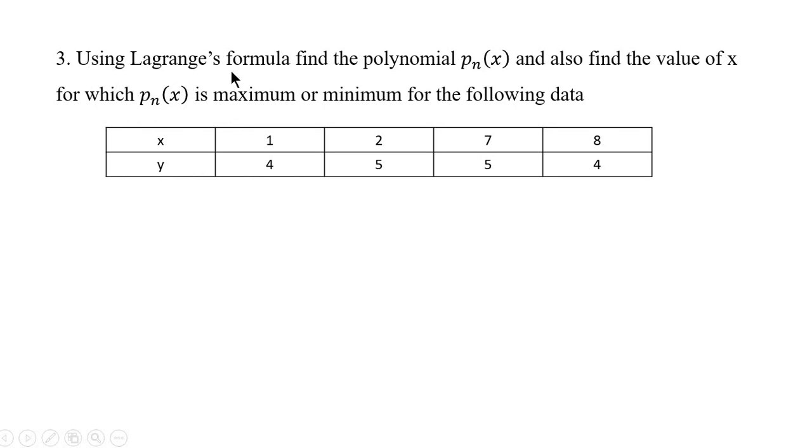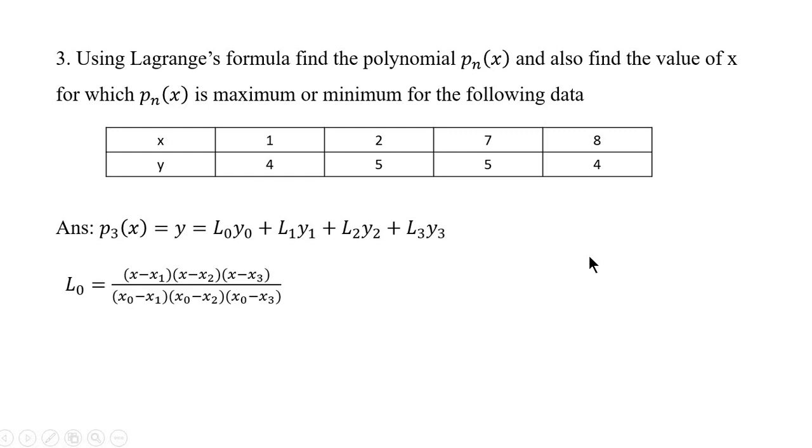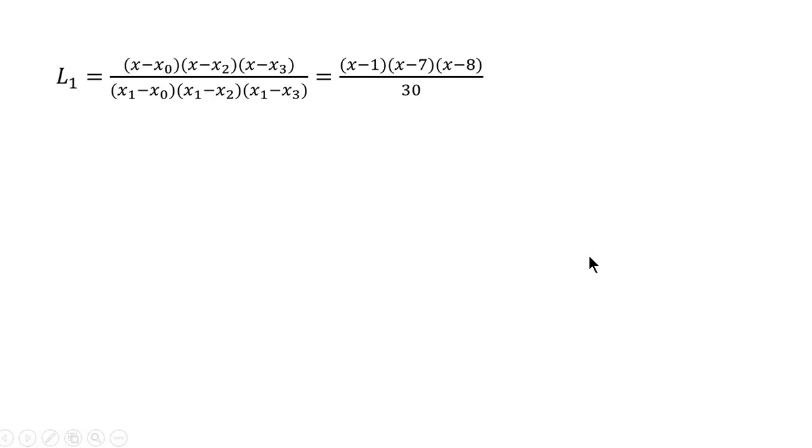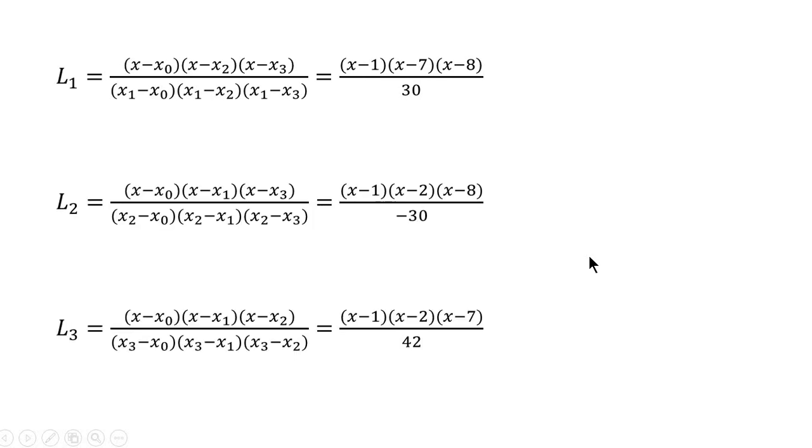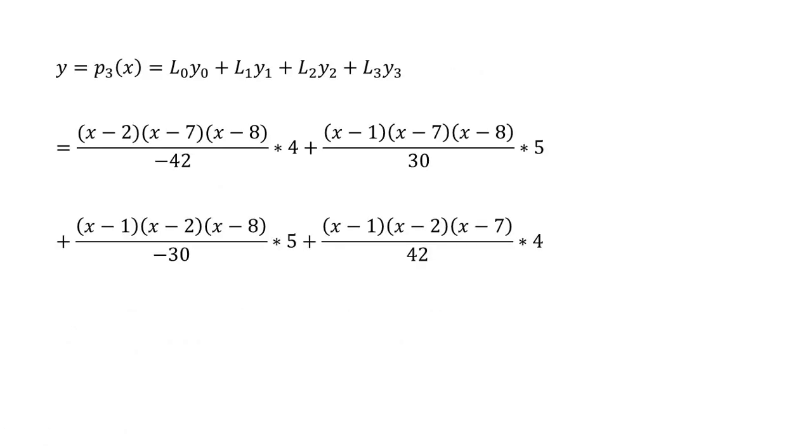Third question: using Lagrange's formula find the polynomial p_n of x and also find the value of x for which the polynomial is maximum or minimum for the following data. Here there are four different values, therefore we get a cubic polynomial, and this is the cubic polynomial. Let us find L0, let us find L1, let us find L2 and also L3. Substituting in the polynomial we get like this,